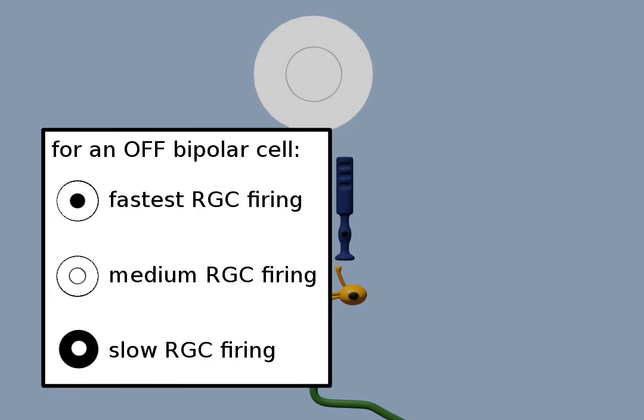For each of these situations, the retinal ganglion cell fires at a different rate. The brain interprets different rates as different patterns. In real life, it's a lot more complicated than this. You'll have way more than three photoreceptors in a given receptive field. But this gives you a basic understanding of how the receptive field in a retina works.